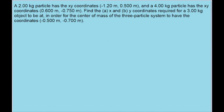And the problem asks, if we were to add a third particle with some known mass, where would we have to add the particle in order for the whole system's center of mass to be here at these coordinates given at the end of the problem?